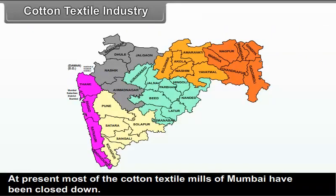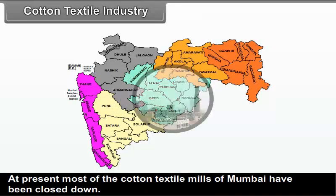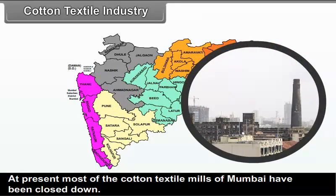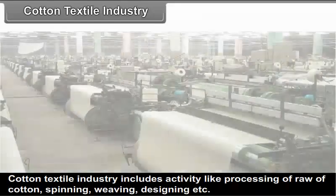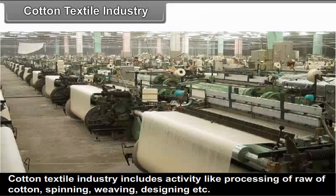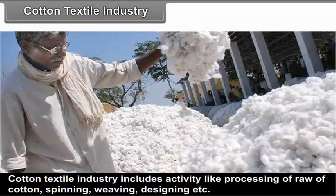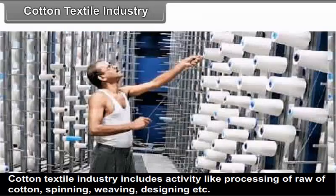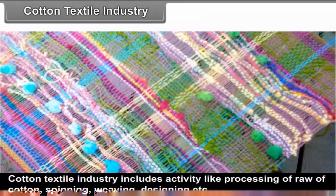At present, most of the cotton textile mills of Mumbai have been closed down. Cotton textile industry includes activities like processing of raw cotton, spinning, weaving, designing, etc.